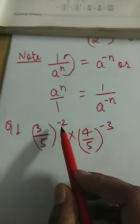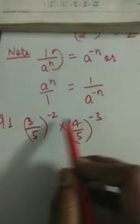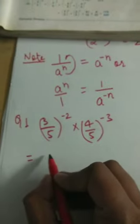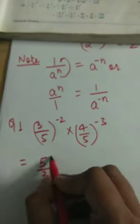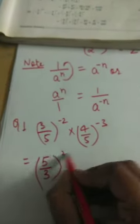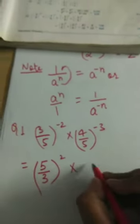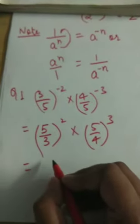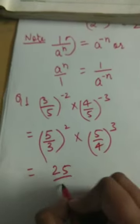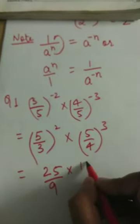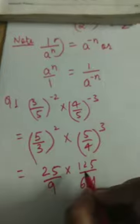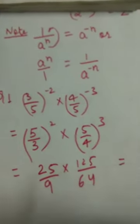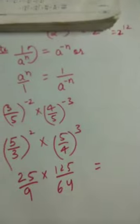Now, in this question the powers are written as negative. To make the power positive, we will just reciprocate the numerator and denominator, and the power will become positive. The question becomes simple: this will be 25 upon 9 into 125 upon 64. We will cancel or solve it to get the answer.